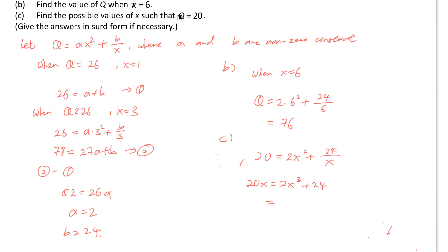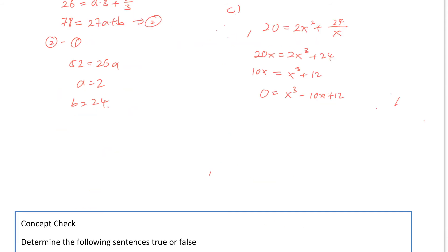I want to simplify this. Since 20 and 24 are both even numbers, divide 2 on both sides: 10x to the power 3 plus 12. Do you have any idea how to solve it? This is not a quadratic equation. So I will change it to cubic equation form. You may let f(x) equals x cubed minus 10x plus 12, and check the values of x to find those such that f(x) equals 0.